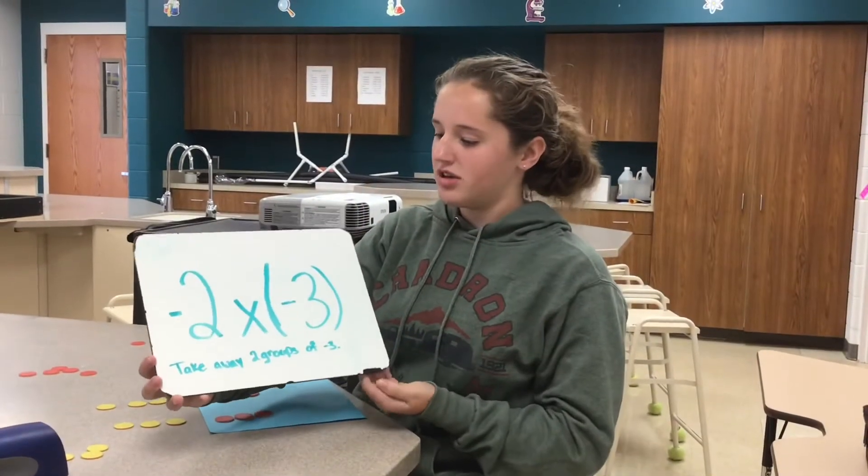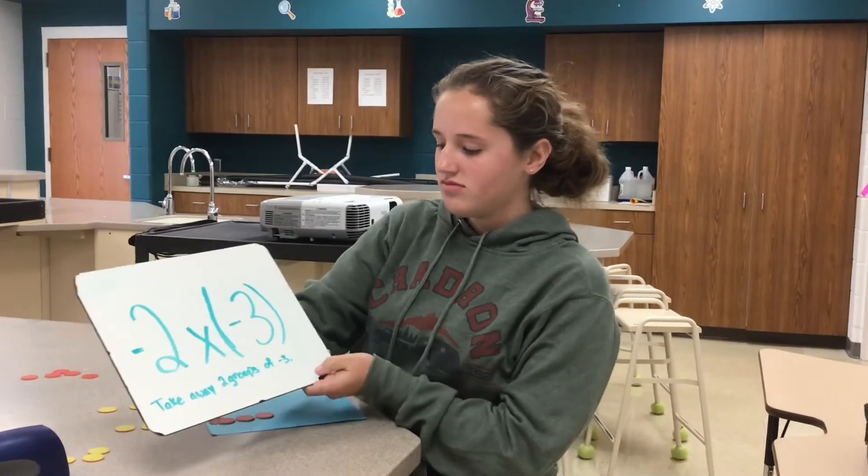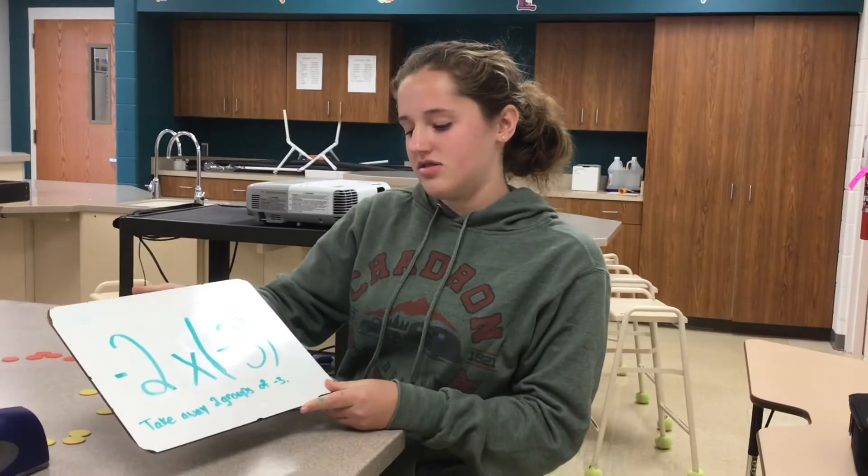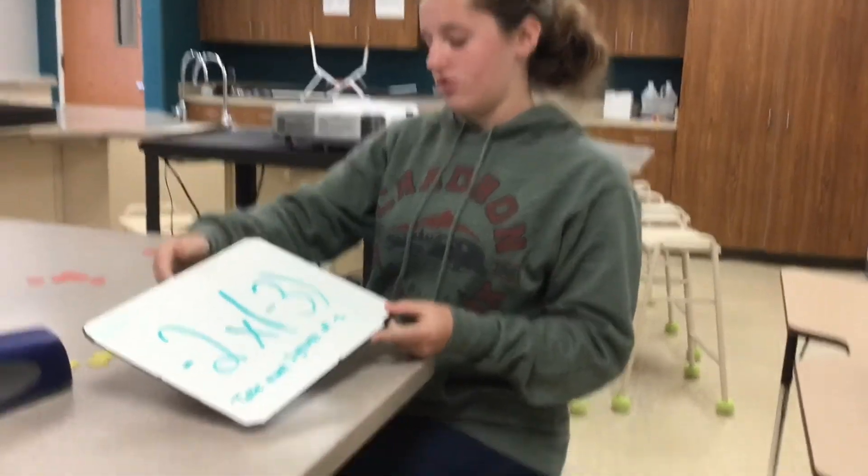The last problem is the multiplication problem, which is negative 2 times negative 3. You can also think of it as take away two groups of negative 3.